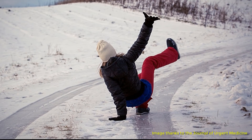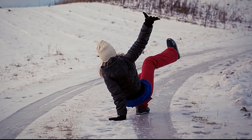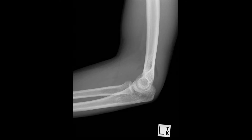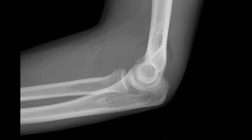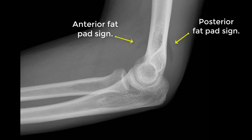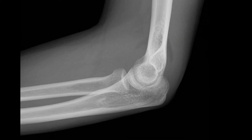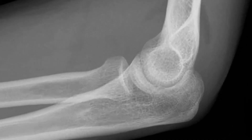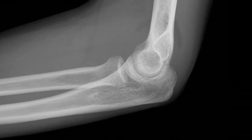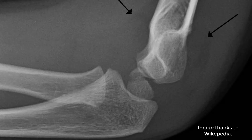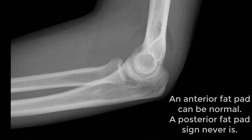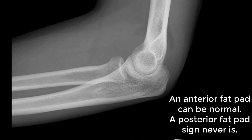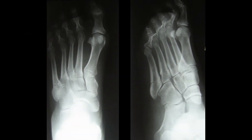X-ray number four is a 24-year-old lady who fell on her outstretched arm and has pain in the elbow. Here's the X-ray — it's difficult to see a fracture. What you can see is both an anterior and posterior fat pad sign. This means there's a joint effusion pushing fat out of the coronoid fossa anteriorly and the olecranon fossa posteriorly. In this context the fluid will be blood, and the intra-articular fracture has to be somewhere — and it's going to be the radial head, as it's the most common cause in an adult. In a child you'd be looking closely for a supracondylar fracture. Recall that a small anterior fat pad sign can be normal, but a posterior one never is.